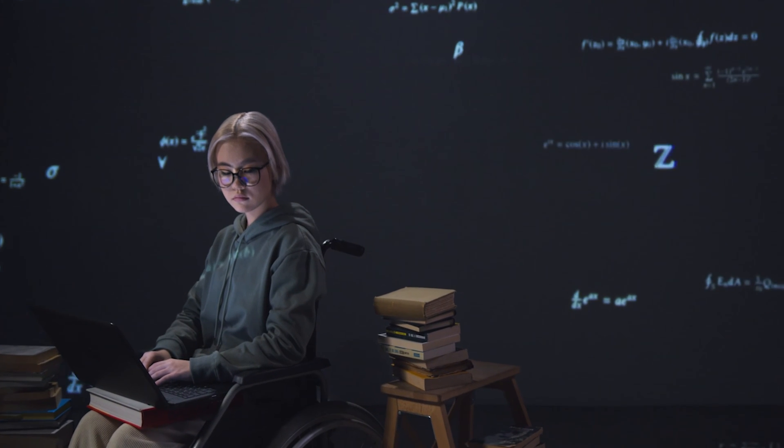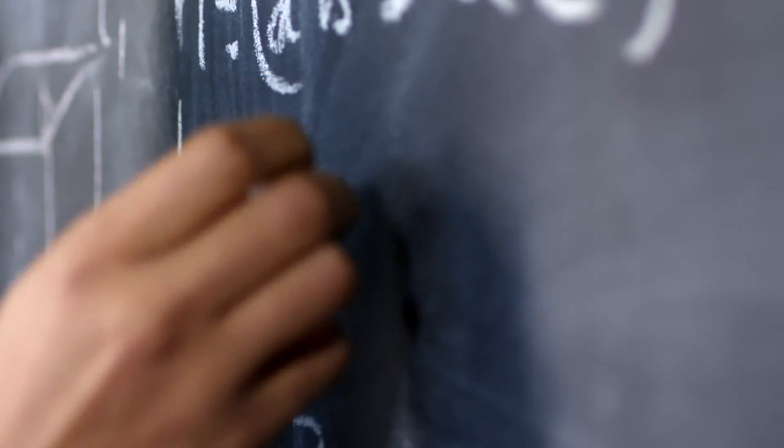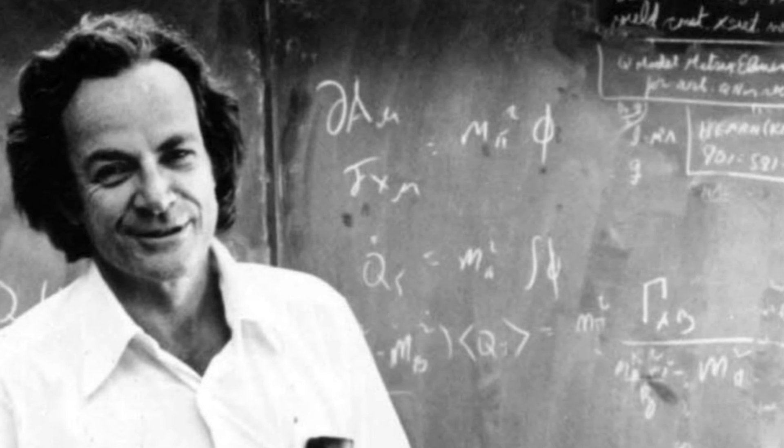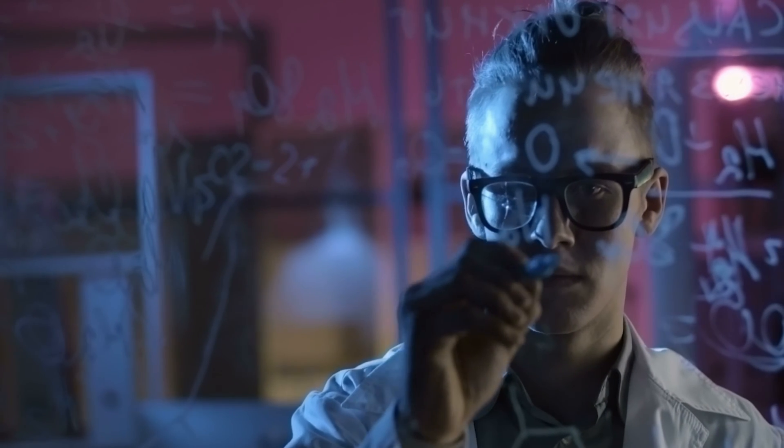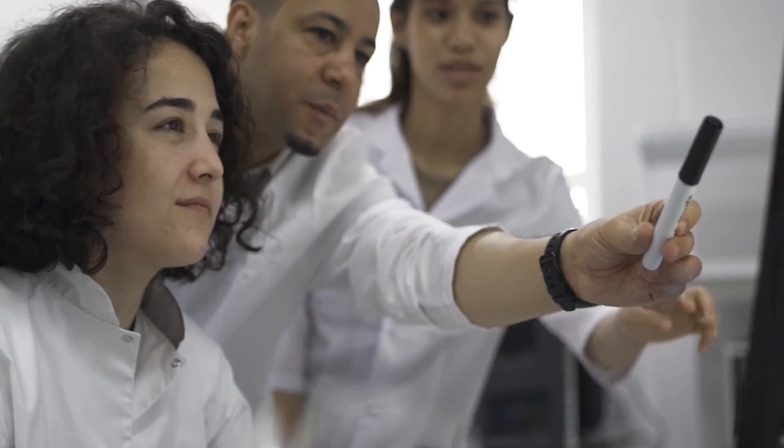But in reality, this math phenomenon known as the fine structure constant is the foundation of one of the biggest unsolved mysteries in physics, one that great scientists like Richard Feynman and Lawrence have been unable to solve. But what exactly does this strange constant mean, and why is it so perplexing to scientists?